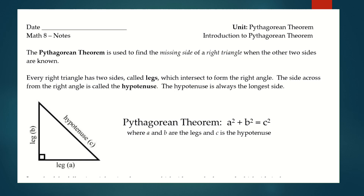Hi everybody, welcome back. Today we're going to be talking about the Pythagorean theorem. To give you a little background, a very long time ago — over 2000 years ago — the Greek philosopher Pythagoras made a pretty amazing discovery about right triangles.